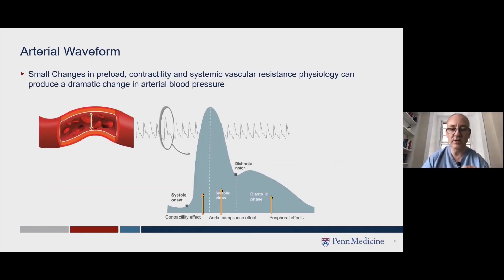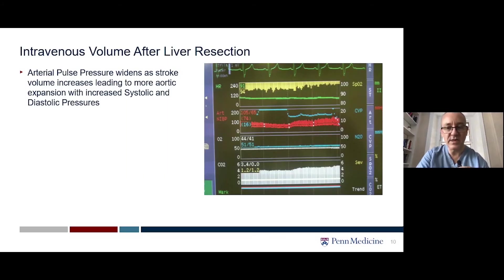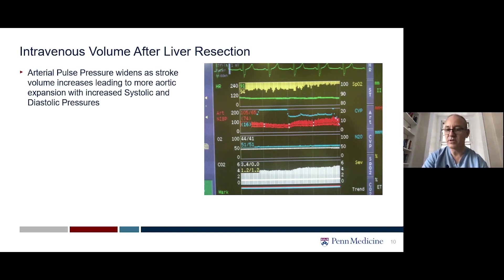HPI looks at the whole arterial waveform and the relationship between all the different components, not just those three phases. When after a liver resection we've got hypotension and low pulse pressure, as we fill the patient with intravenous fluid boluses the systolic and diastolic blood pressure increases, as does the pulse pressure — a reflection of increased volume stretching the arterial tree and increased tone. This is reflected when we use the HPI device in real life as well.